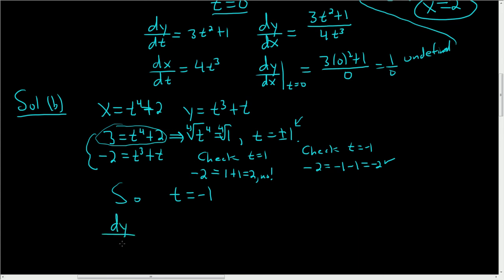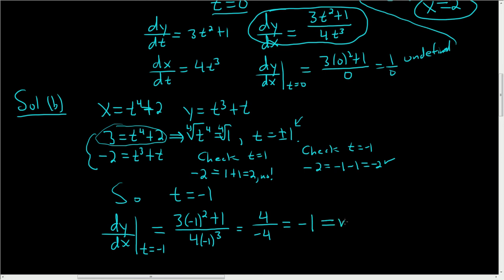So now dy/dx to find the slope when t is equal to negative 1. We're replacing t with negative 1. So we get 3 times negative 1 squared plus 1 divided by 4 times negative 1 cubed. Negative 1 squared is 1, so we end up with 4 in the numerator and negative 4 in the denominator. So negative 1 is our slope.